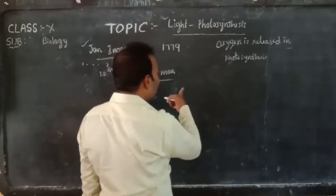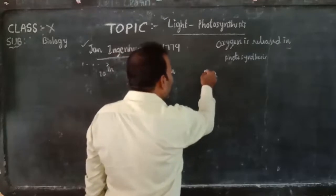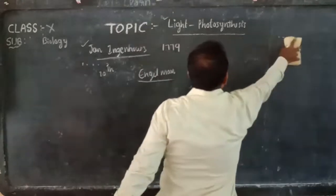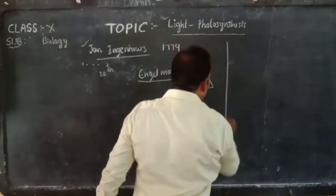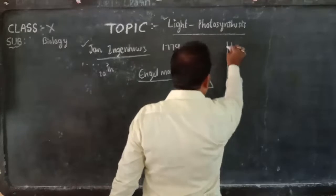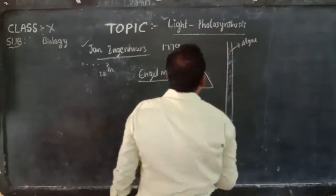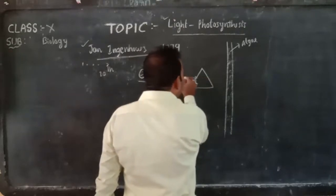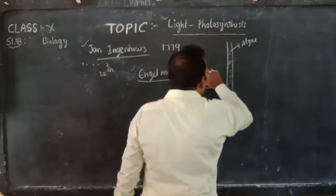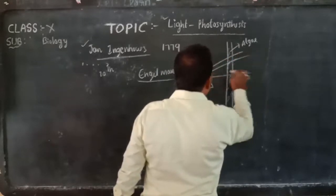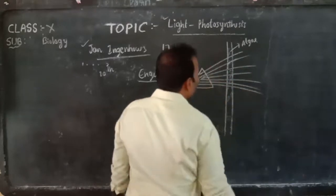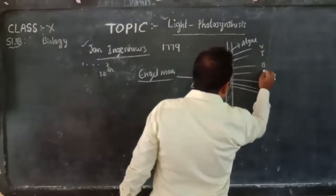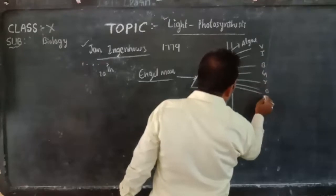In Engelman's experiment, he took one green algae and exposed it to all seven colors of light present in visible light. He exposed light onto a prism, and the light is refracted into seven different colors. The seven colors of visible light are violet, indigo, blue, green, yellow, orange, and red.